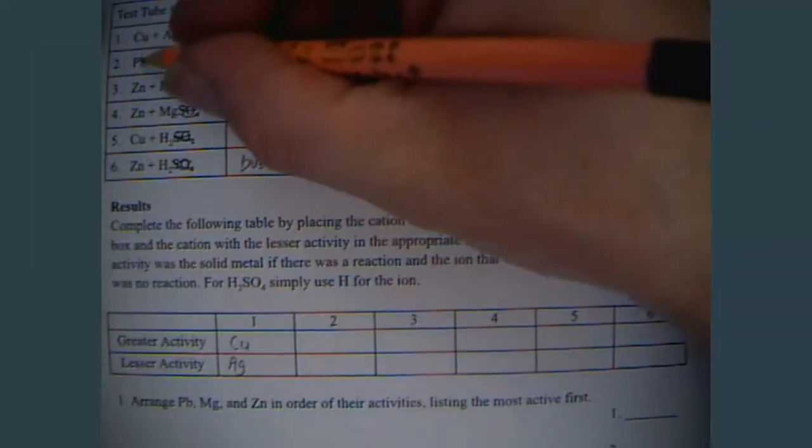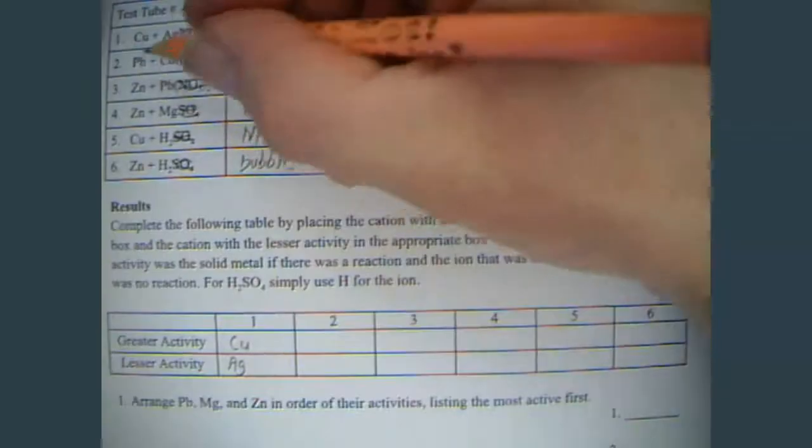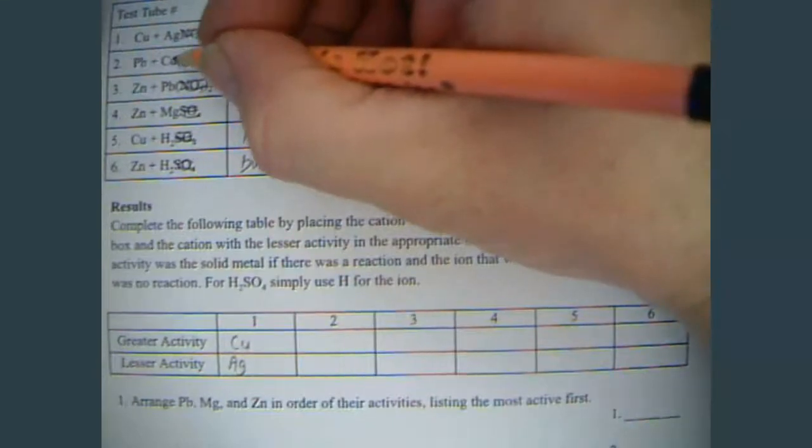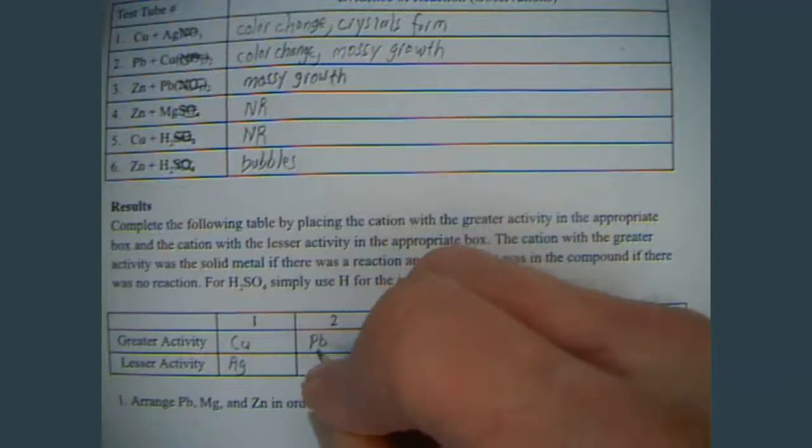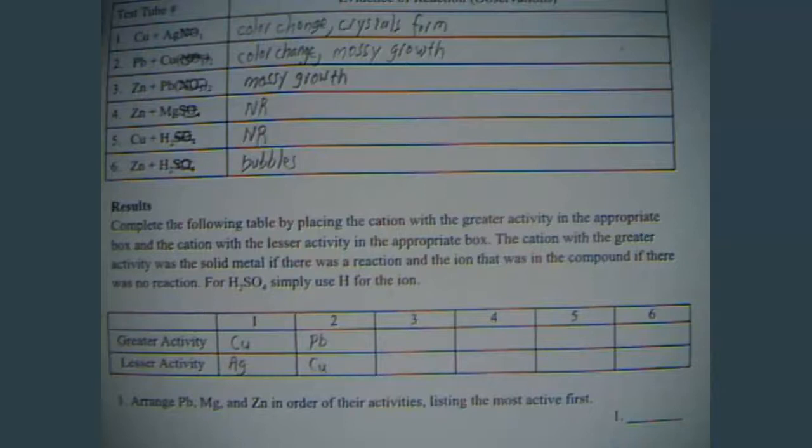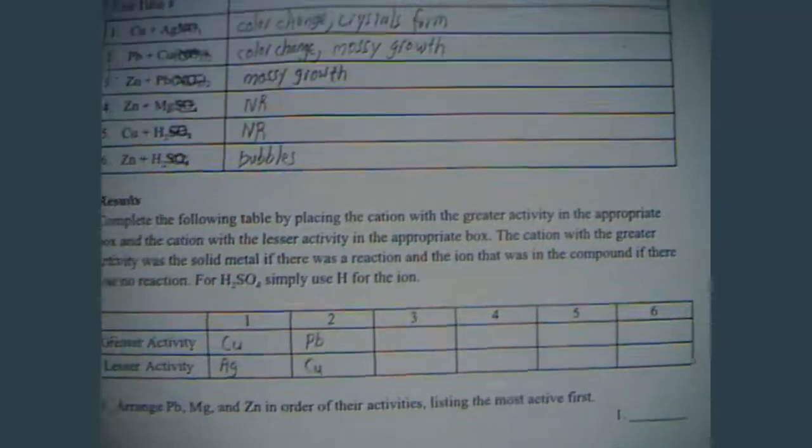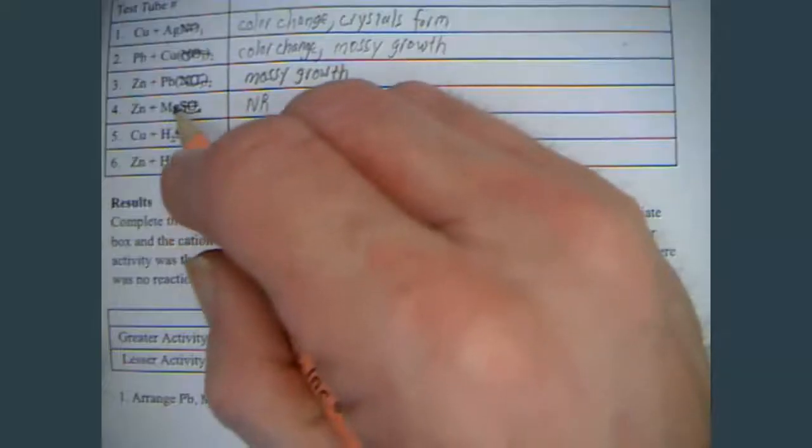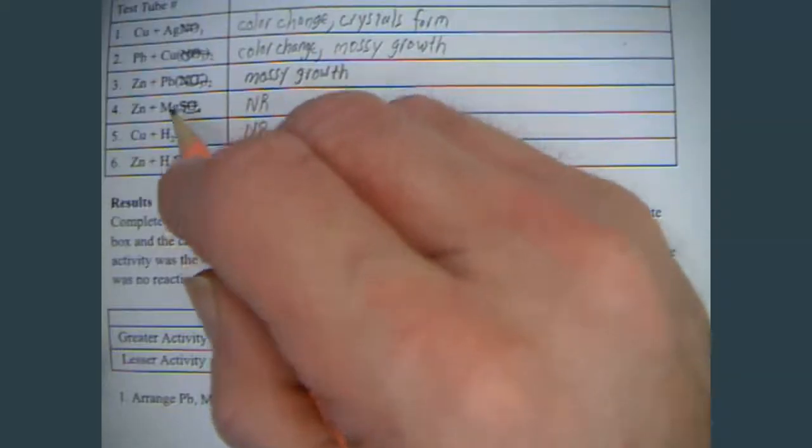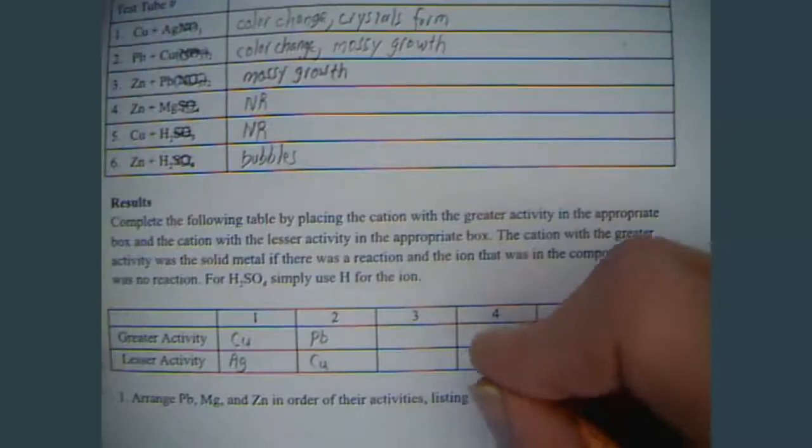Same thing here. If there is a reaction, the solid metal kicks out the aqueous metal, the one that's an ion in solution. If there is no reaction, kind of like I told the joke in chemistry class, I got no reaction. For instance, with this one, the zinc didn't have enough power to come over and kick the magnesium out. Therefore, the magnesium is more reactive.